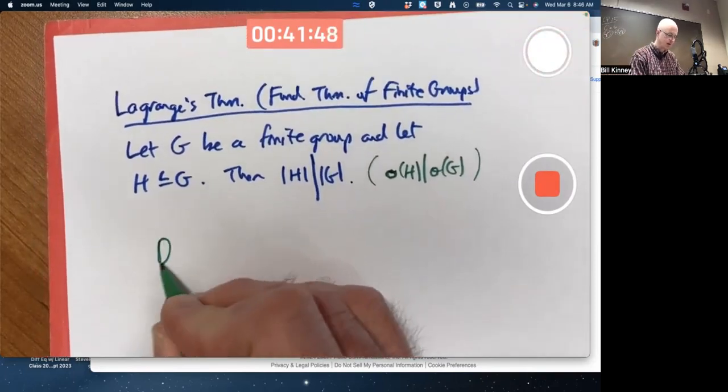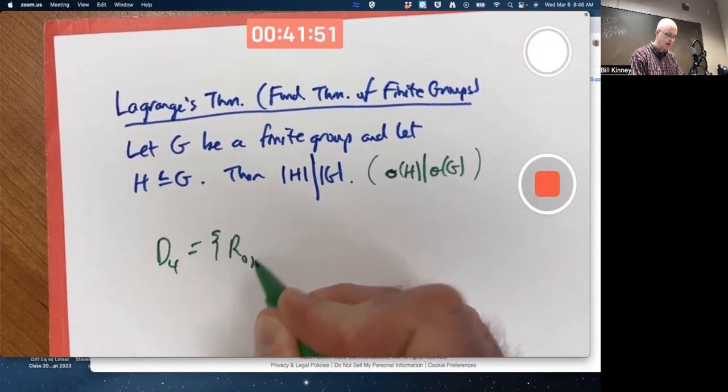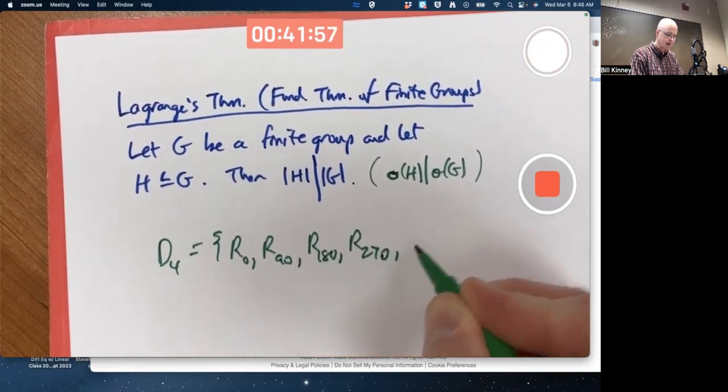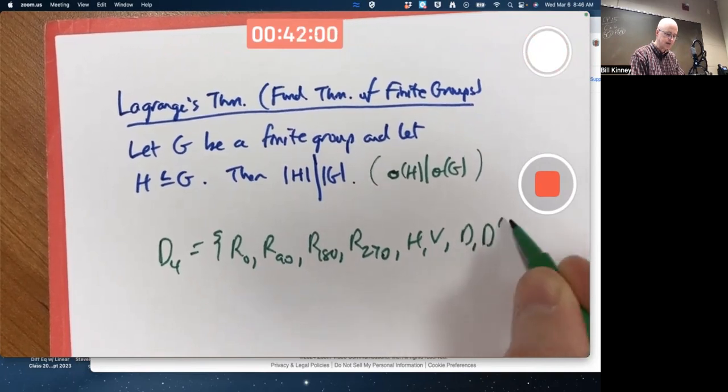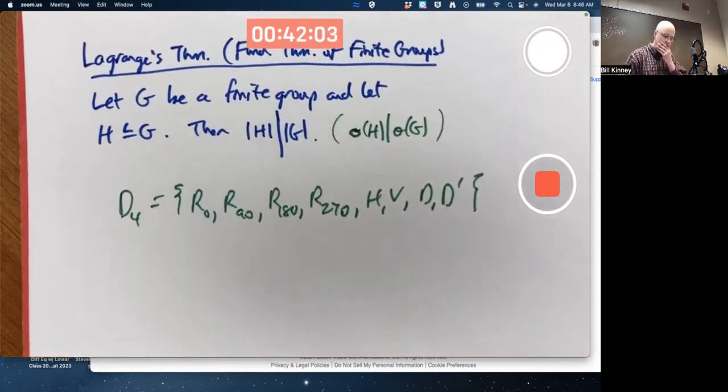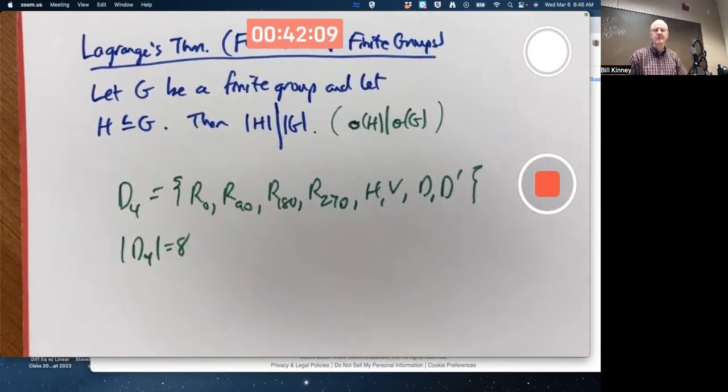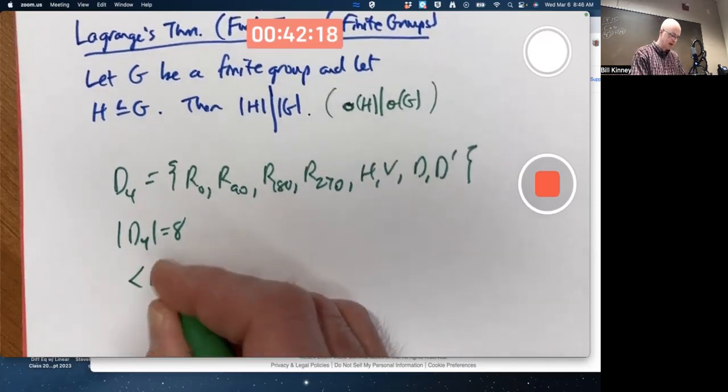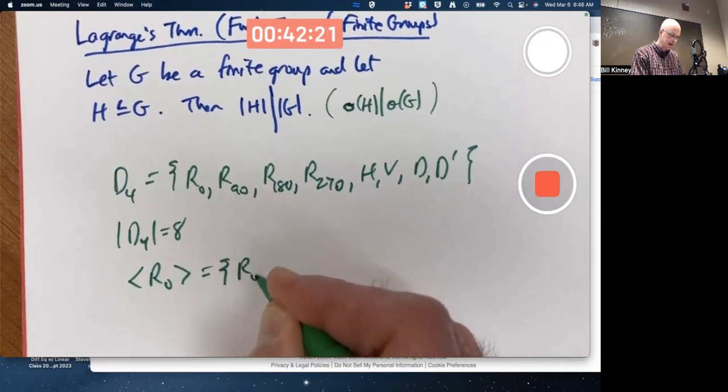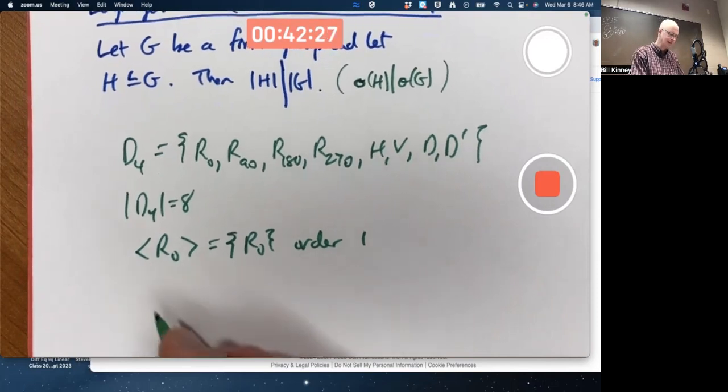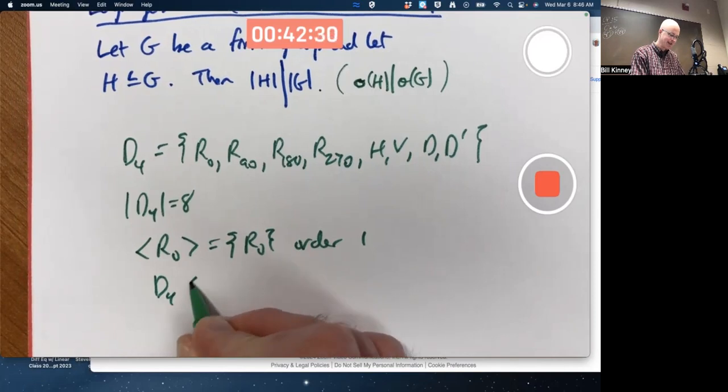Think about like D4. R0, R90, R180, R270, H, V, D, D prime, these are the symmetries of a square. D4 has order 8. It does happen to have a subgroup for every divisor of 8. The trivial subgroup generated by the identity has order 1, and there is a subgroup of order 2, a subgroup of order 4, and a subgroup of order 8. The subgroup of order 8 is D4 itself. This is a subgroup of D4.